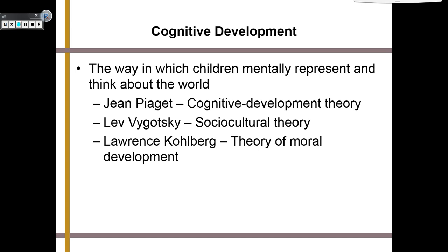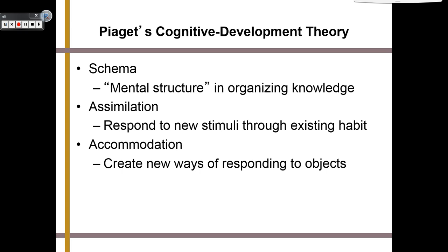Piaget came up with the cognitive development theory — how you develop the ability to think. He said that our schemas, or mental structures that we use to organize knowledge, are involved in what we understand about the world around us, and that we will either assimilate or accommodate new information. Assimilation is to respond to new stimuli through existing habits. Accommodation is to create a new way of responding to the object — something new has entered your life, so you do something new in order to deal with it. Piaget had four stages of his cognitive development theory.